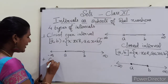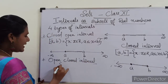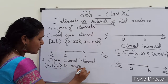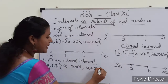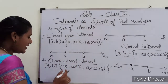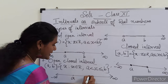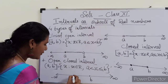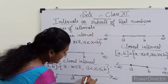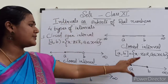For the open-closed interval (a, b], the set builder form is the set of all x such that x belongs to R and a < x ≤ b. On the number line, a is not included so we use a hollow circle, b is included so we darken that point, and the in-between region is darkened. These are the four types of intervals, all of which are subsets of real numbers.